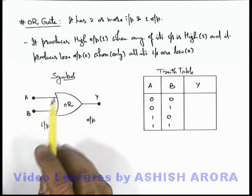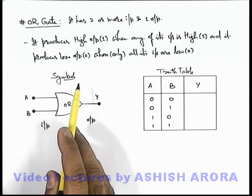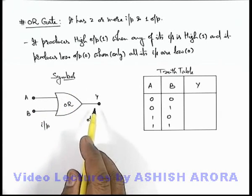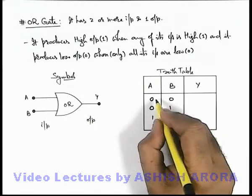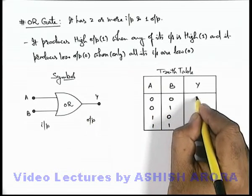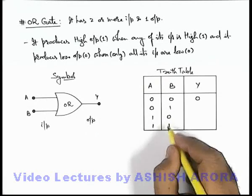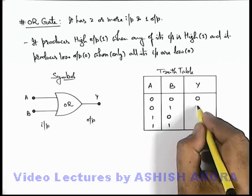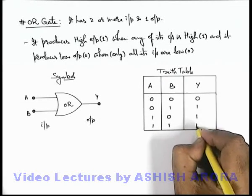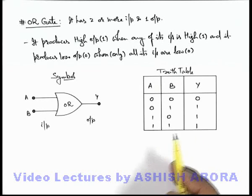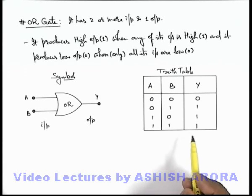If all the input terminals are at low signal voltage, then the output signal will also be of low voltage. So for the first combination, Y will be low, that is zero. In all other cases, if any one or both of the input terminals are high, the output terminal will be high. This will be the truth table, and using this truth table we can also analyze the waveform in the next section.